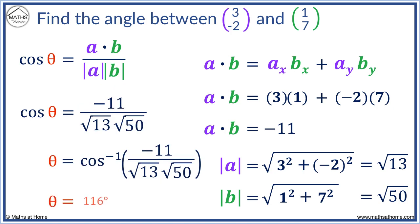We get theta equals 116 degrees. The angle between the two vectors is 116 degrees.